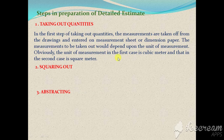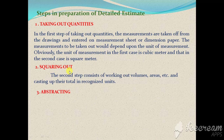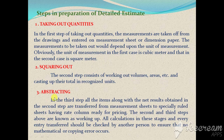The second step is squaring out. After taking out the quantities, we calculate them by multiplying length, width, height, and numbers. The last step is abstracting — after taking measurements and squaring out, the quantities obtained for different items of work are recorded into the abstract sheet.